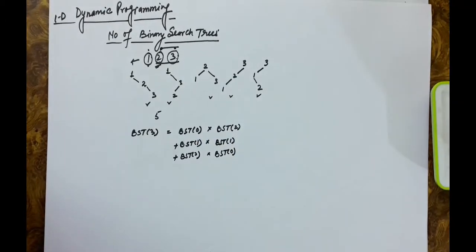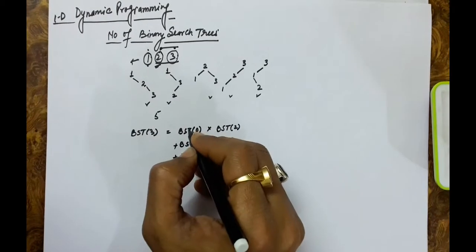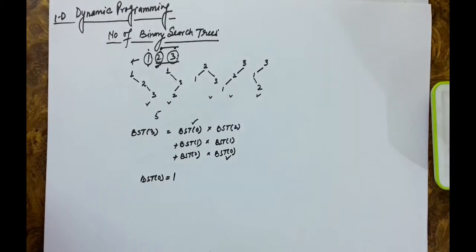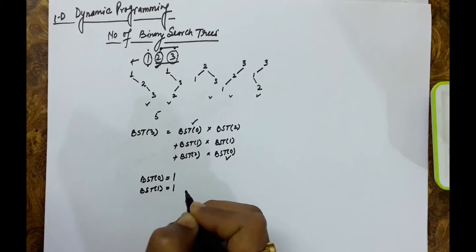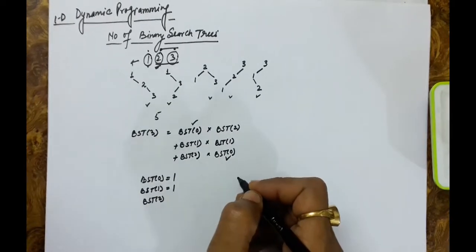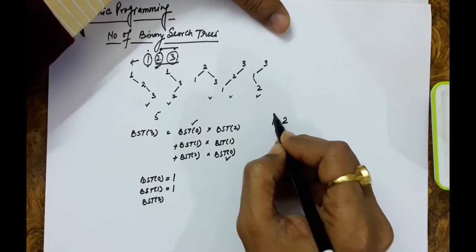By definition, a binary tree can also be null — the null tree is allowed. So if you have zero keys, that counts as a single tree, meaning BST(0) = 1. Obviously, with a single key, only one tree is possible, so BST(1) = 1.